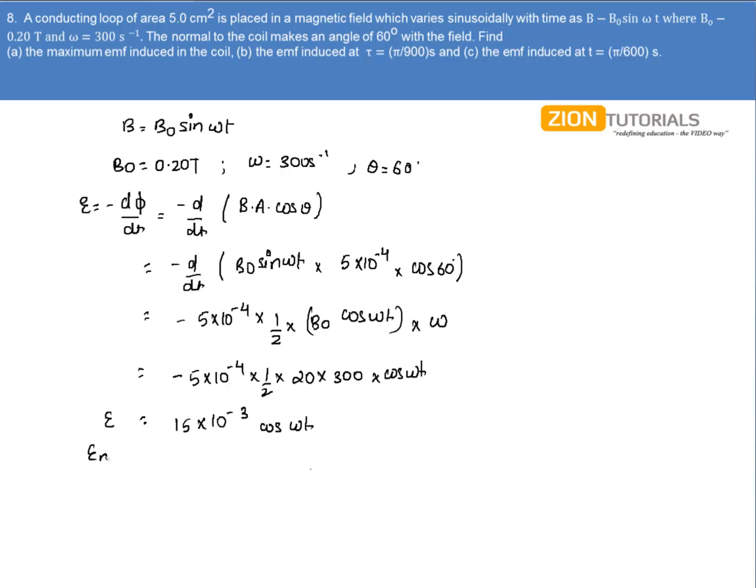That is 15 × 10⁻³ cos ωt. So the maximum EMF that can be generated will be the coefficient of cos ωt, and it is given by 15 × 10⁻³ volts. This is the answer to the first part.